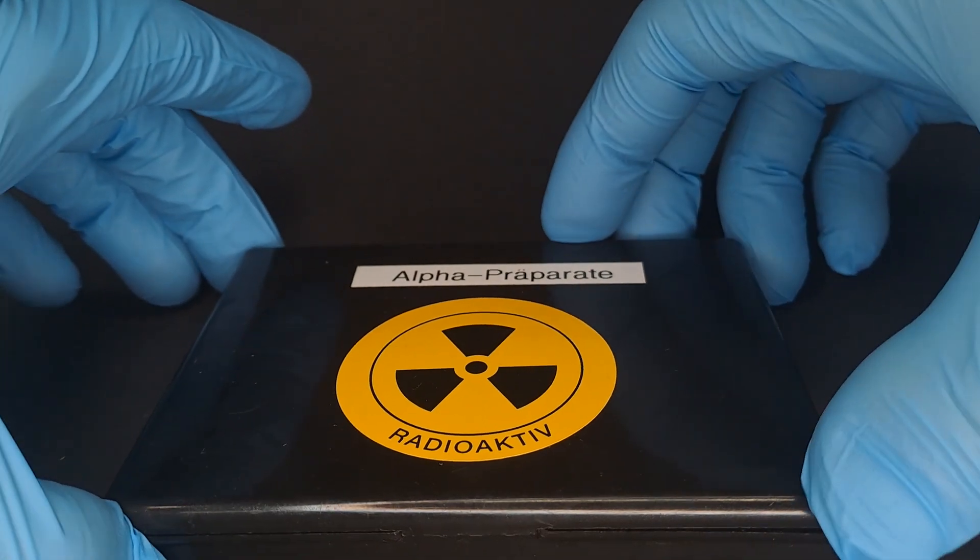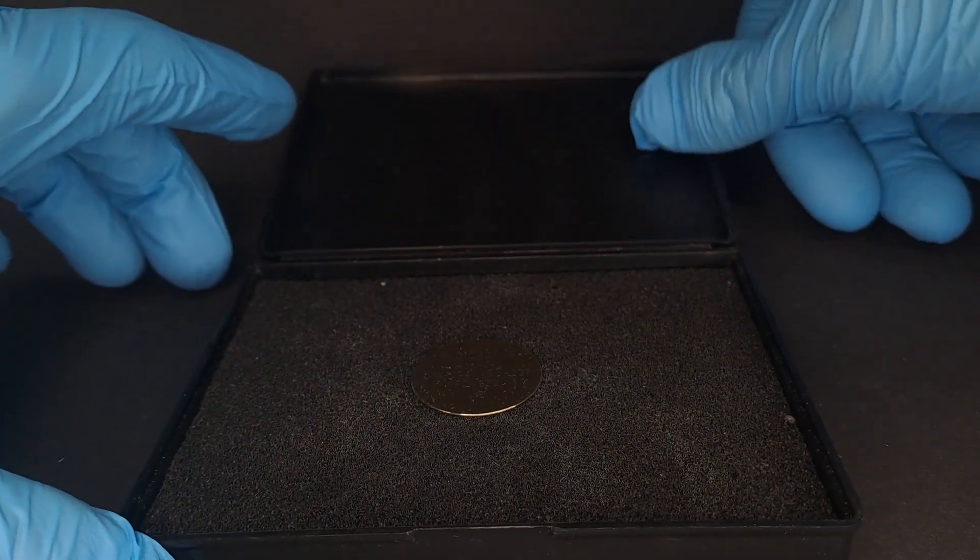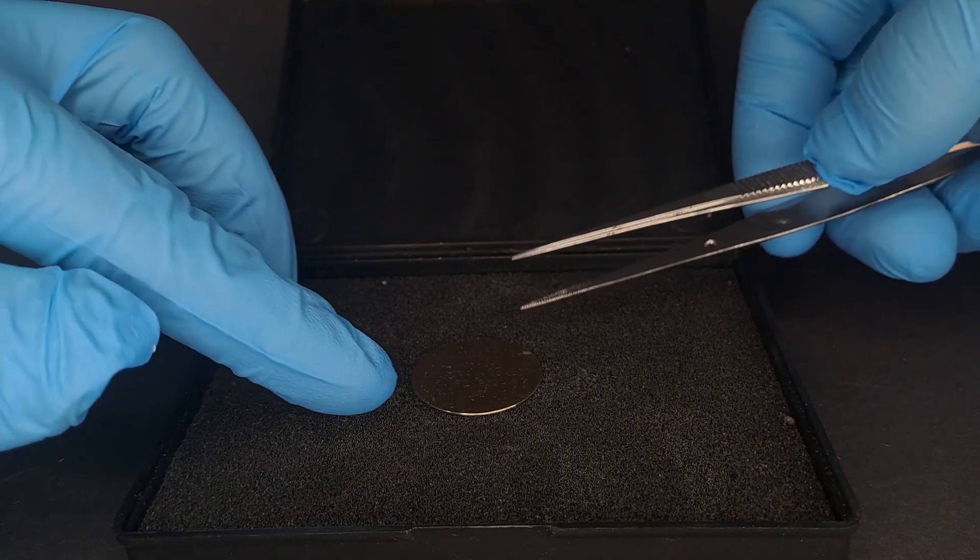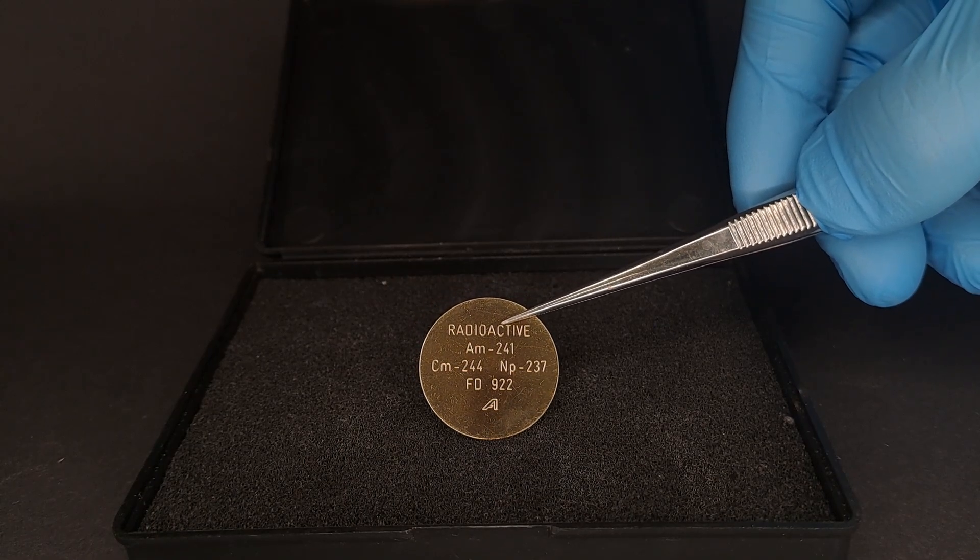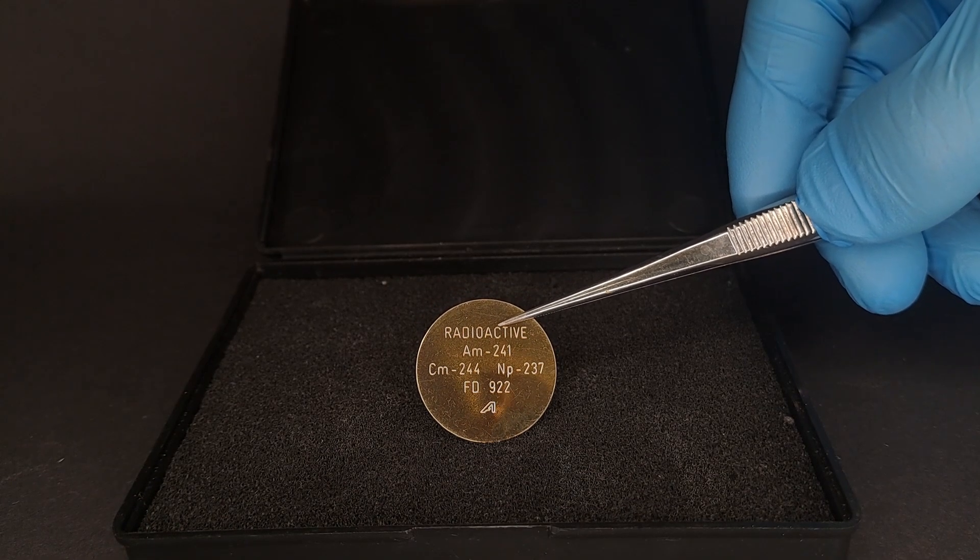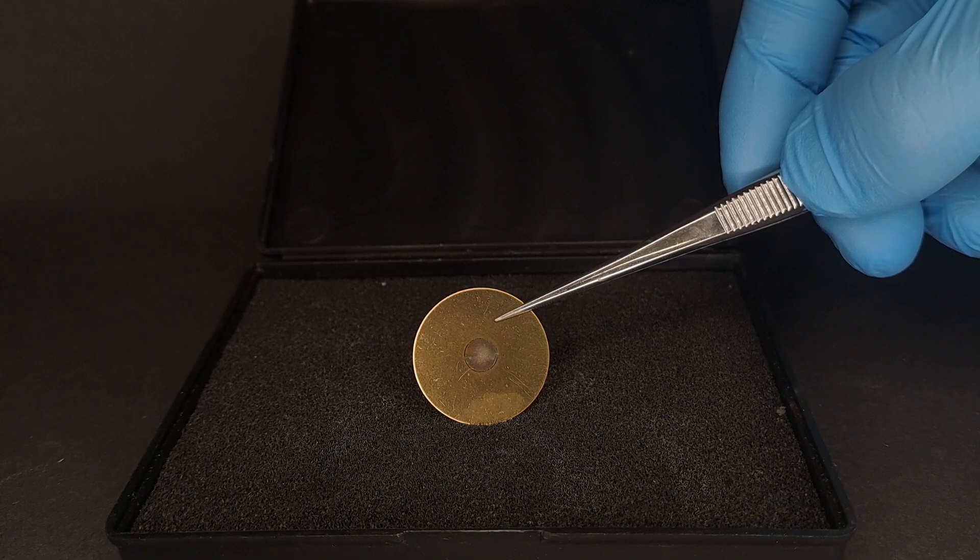For this, we need a calibration sample. In this case, it's a three-element alpha source consisting of americium-241, curium-244, and neptunium-237. On the backside, we can see the active material onto which these elements were electrochemically deposited.